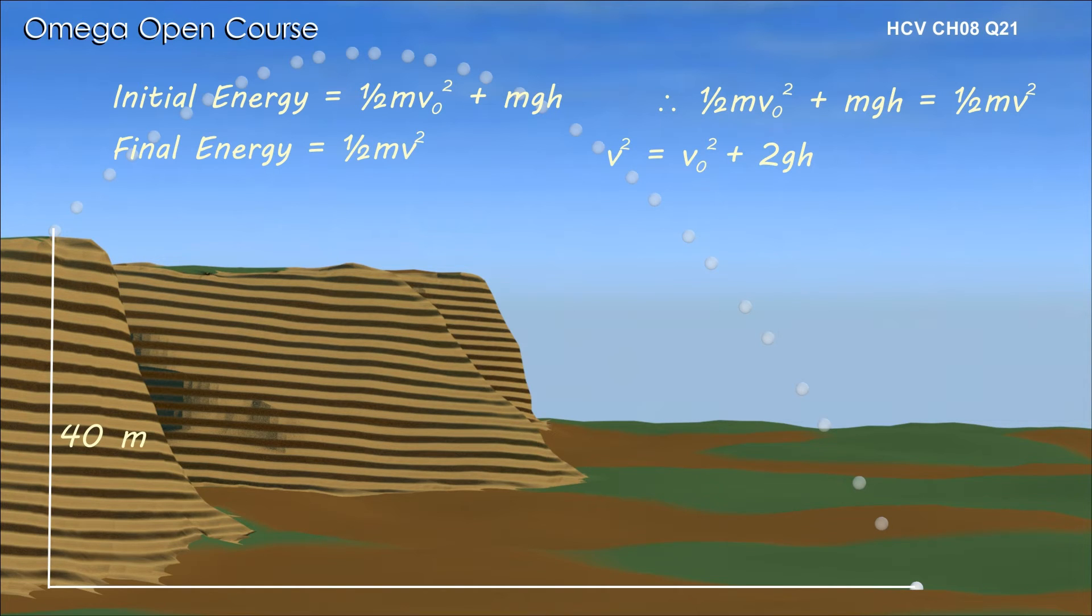Dividing both sides by half m, we get v square is equal to v0 square plus 2gh, or v is equal to root under v0 square plus 2gh.